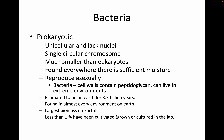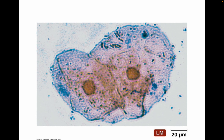Less than 1% of all bacteria have actually been grown or cultured in the lab. Here's a picture of two eukaryotic cells — you can see the nuclei and well-defined cell membranes. These are epithelial cells or skin cells, and sprinkled around are the much smaller bacteria. The scale bar shows this distance is 20 microns or 20 micrometers.